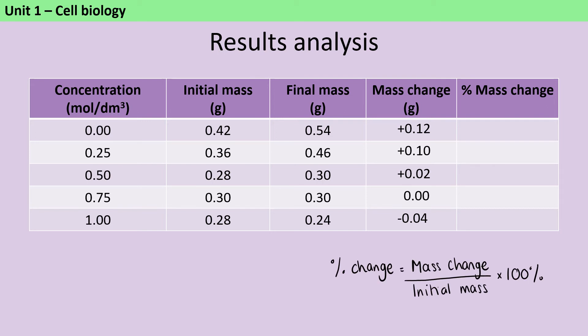Now, the way in which to do this is to take that mass change that I've just calculated and divide it by the initial mass. So we're saying, what's 0.12 grams out of 0.42 grams? You can think of it like a fraction. And then because I want it as a percentage, I need to either use the percentage button on my calculator or just multiply it by 100. So for that first piece of potato, the mass has actually increased by 29%.